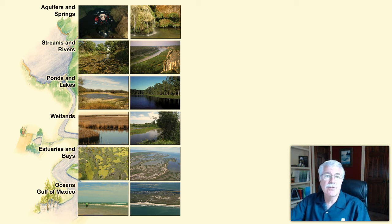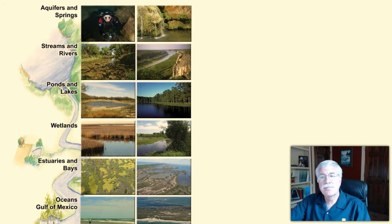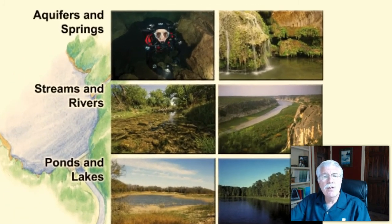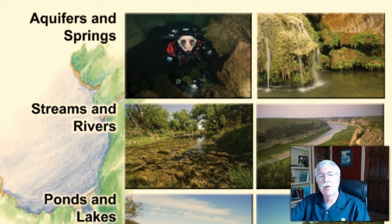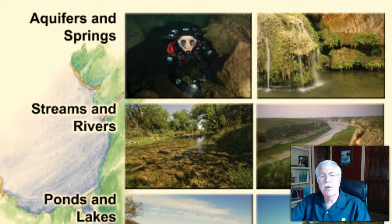First, let's talk about aquifers and springs. Aquifers are underground reservoirs and rivers of water. The water they contain is called groundwater. Aquifers form where water seeps into the ground over time — sometimes this water is ancient, having fallen on the land thousands of years ago. Most of Texas's land surface sits over aquifers. Some of these aquifers are large and some are small. About half of the water we use in Texas is pumped from these aquifers by man-made wells drilled deep into the earth.